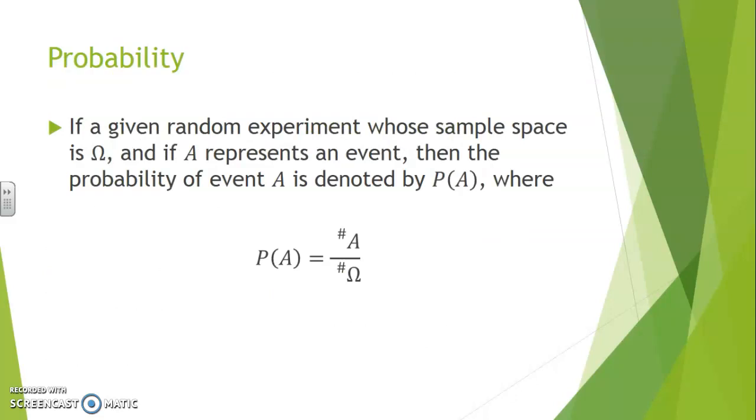When it comes to probability, if a given random experiment is formed of sample space omega, and if A represents an event, then the probability of event A being realized is denoted by P of A.